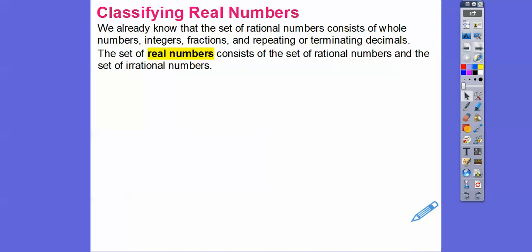The set of real numbers consists of the set of all those rational numbers and the set of irrational numbers. Irrational numbers are not rational numbers, and vice versa — rational numbers are not irrational numbers.